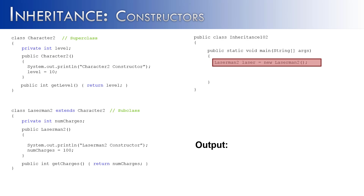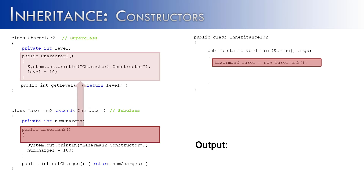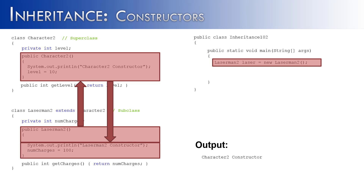So we create an object of the Laserman2 class, and it goes into the Laserman2 class to look at its constructor. But it realizes that inheritance is going on and therefore it has to meet the needs of the superclass before it can continue on with the needs of the subclass. So it's going to get to about this point and then go up to the superclass's constructor. Inside the superclass's constructor, it's going to print 'character2 constructor' and assign level to 10. Then once it's finished with that operation, it returns to the Laserman2 constructor and finishes out, printing 'Laserman2 constructor' and assigning numCharges to 100.